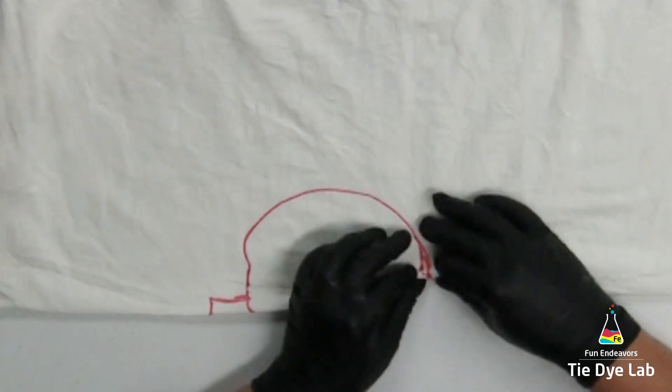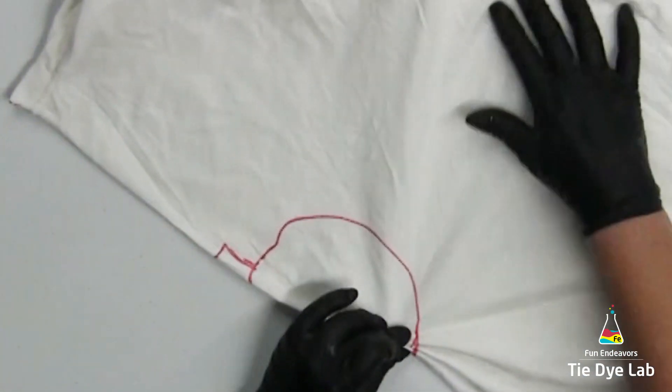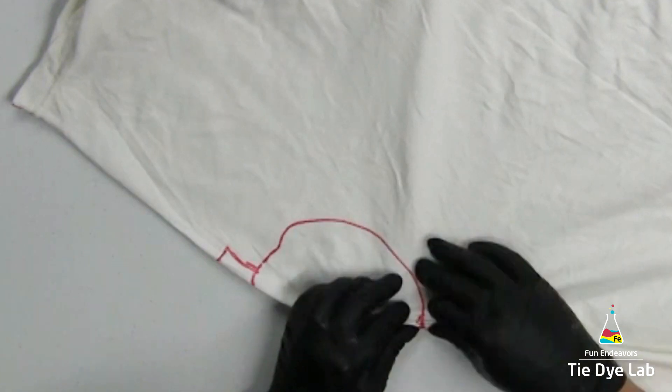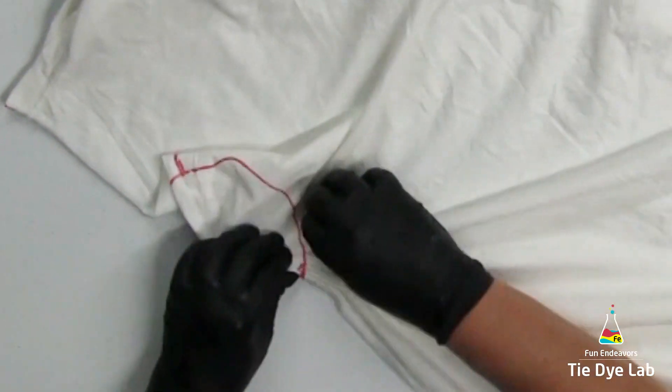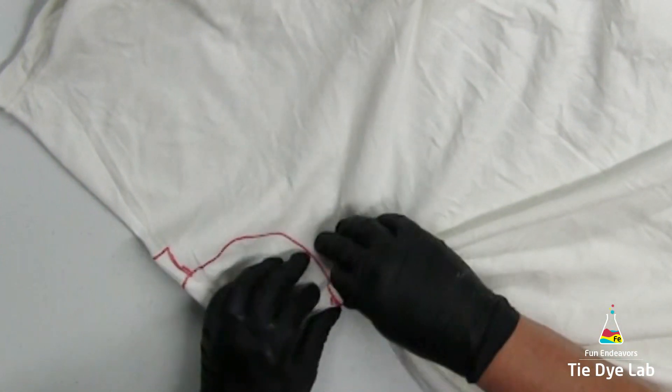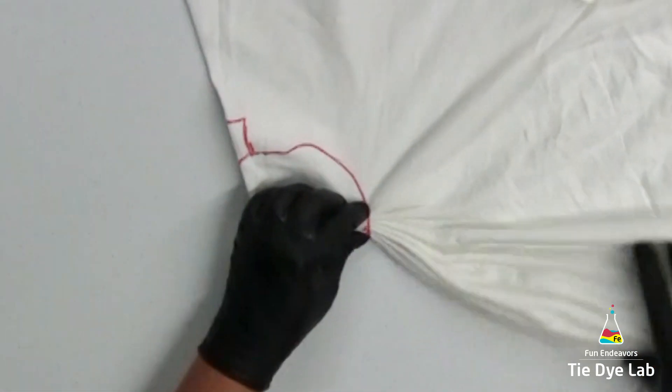I'm beginning by fan folding the pumpkin area and I'm making pretty small fan folds so that I can get all around these curves and keep my lines straight on my fan folds.